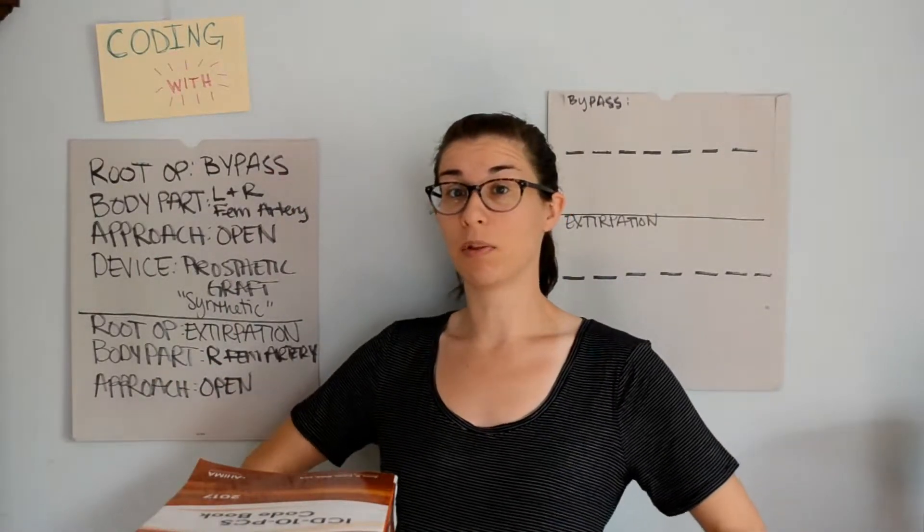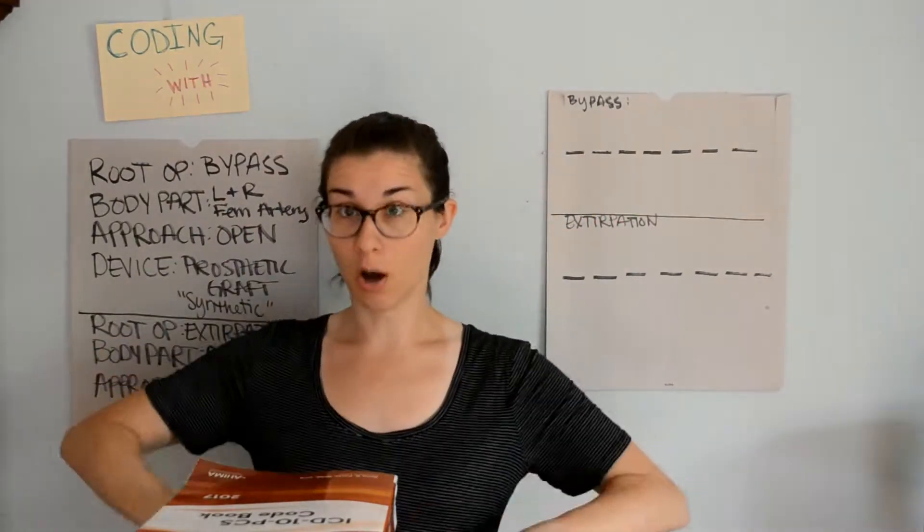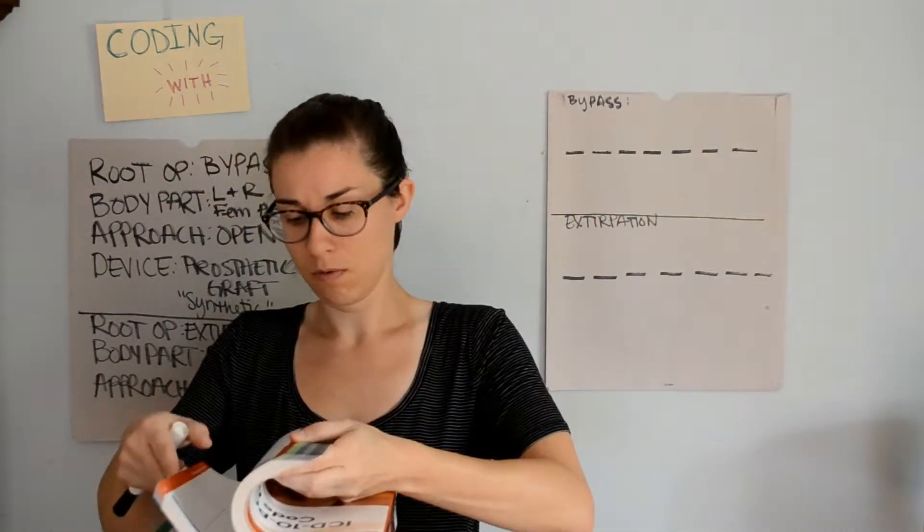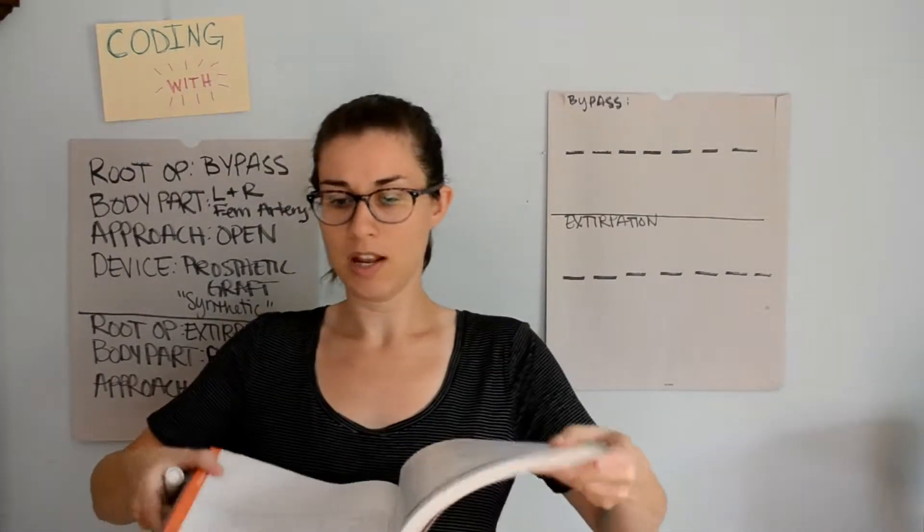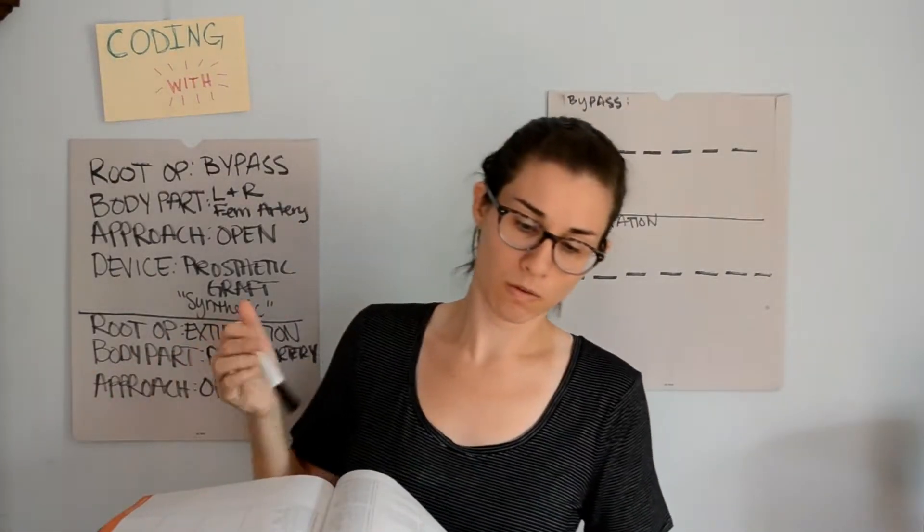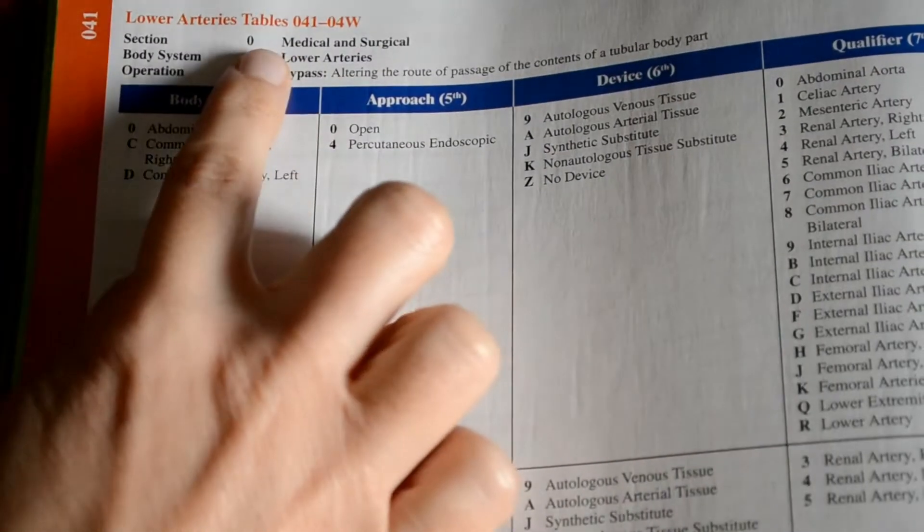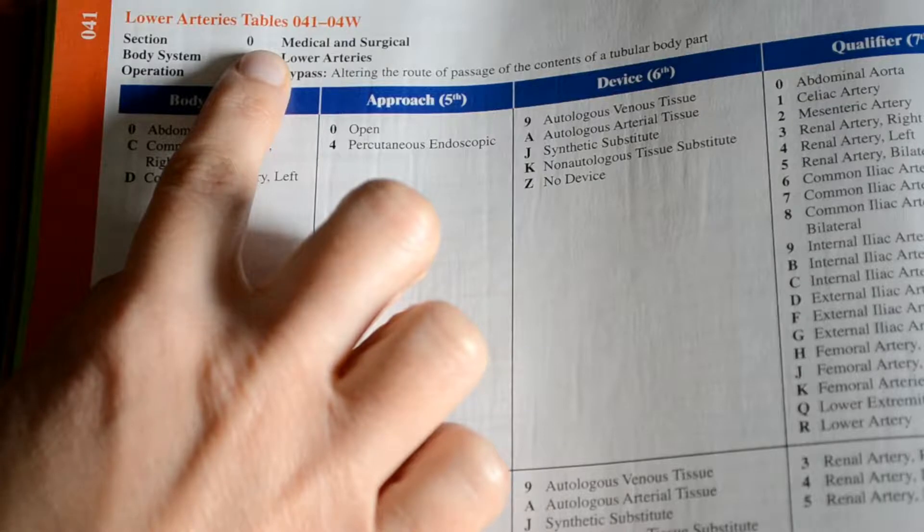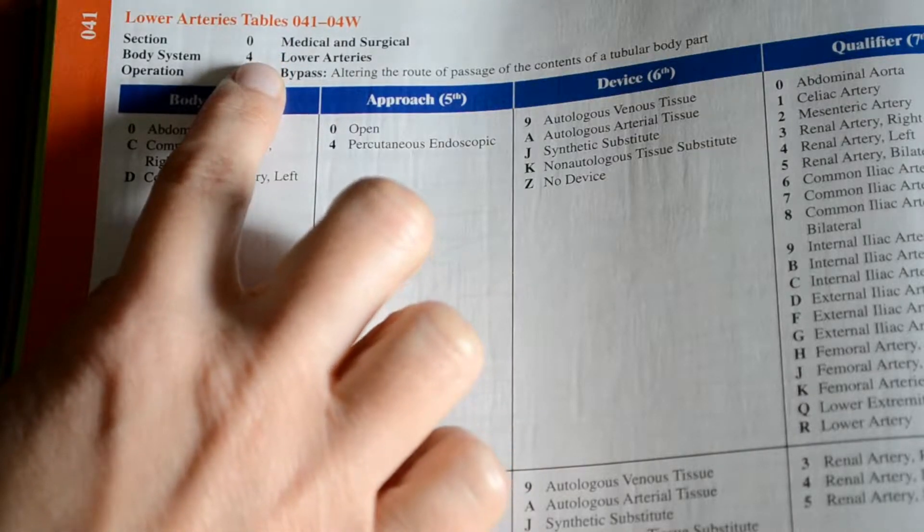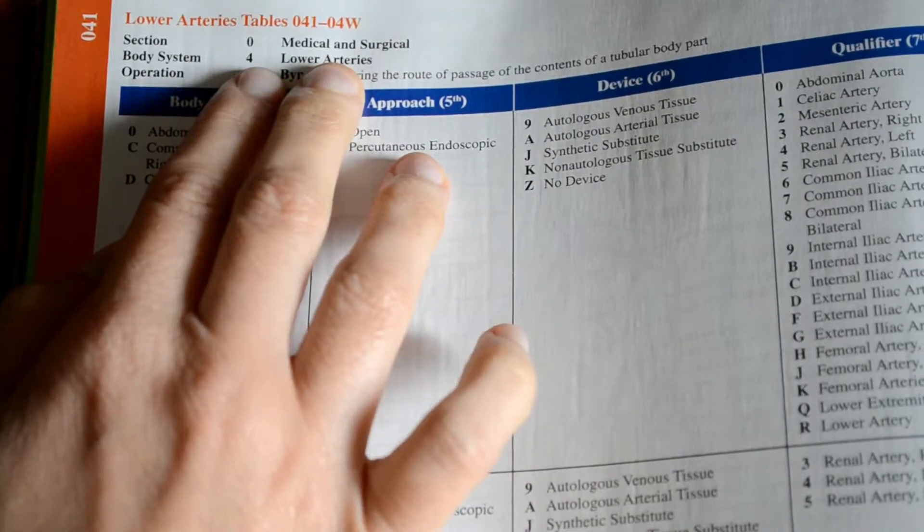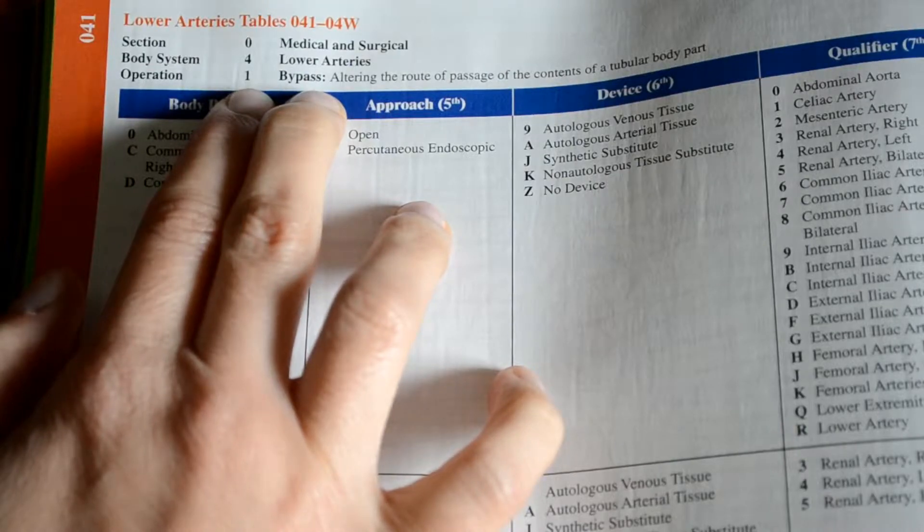Because femoral, that is below the lumbar of the spine, it's in the leg, so that would be lower arteries. And lower arteries, it is an orange section, and we need to look for the bypass table, which is the very first table. So, the section medical surgical, that's an O. Body system, lower arteries, that's a 4. And operation, or the root operation, that is bypass, so that is a 1.